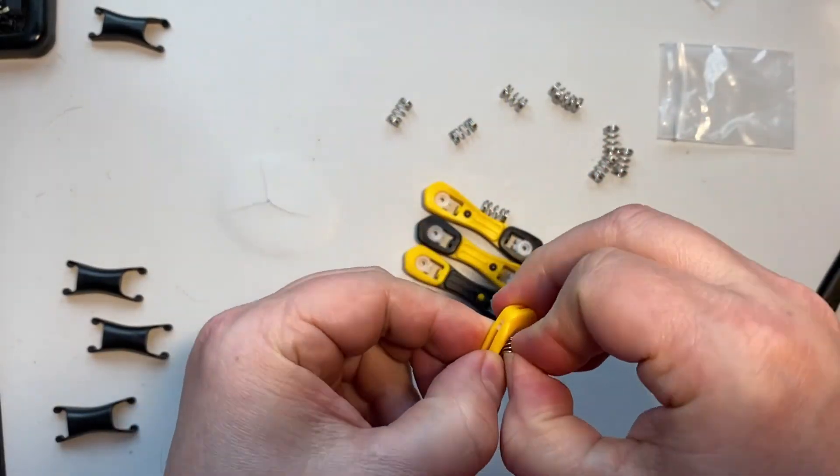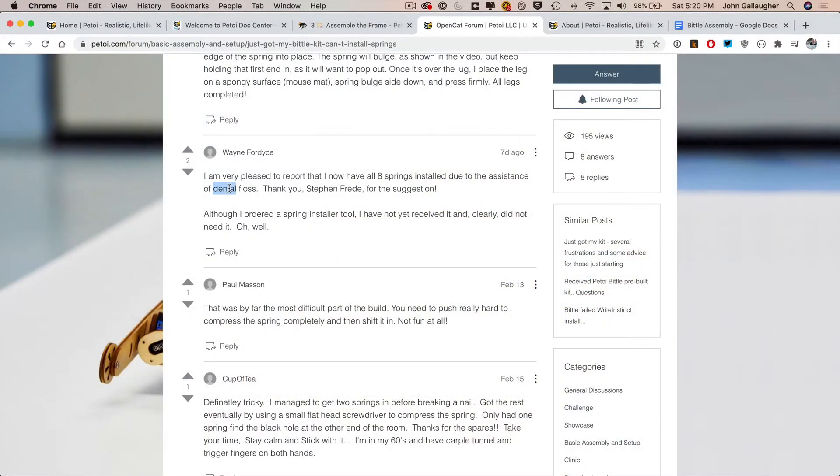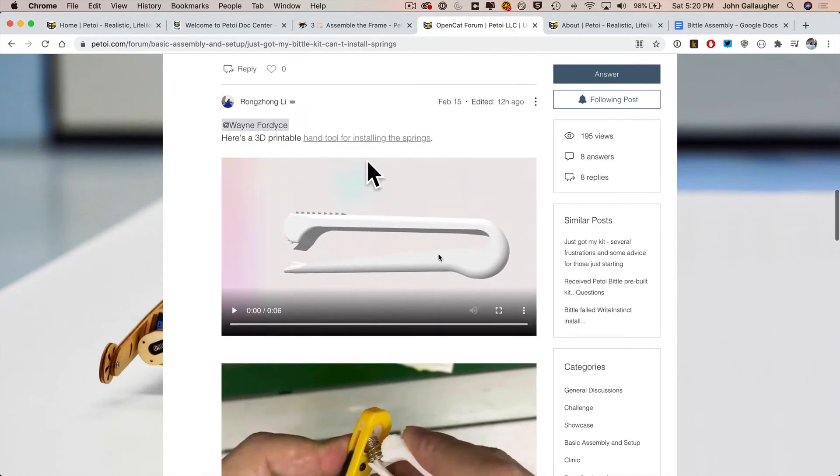Now I also tried some of the tricks that were mentioned in the Biddle forums, like using dental floss to pull one end of the spring, but nothing seemed to work. And at the time I was doing the assembly, I also didn't have access to a 3D printer, so I couldn't build the neat spring pushing tool that Rongzhong provides a file for in the Biddle forums.